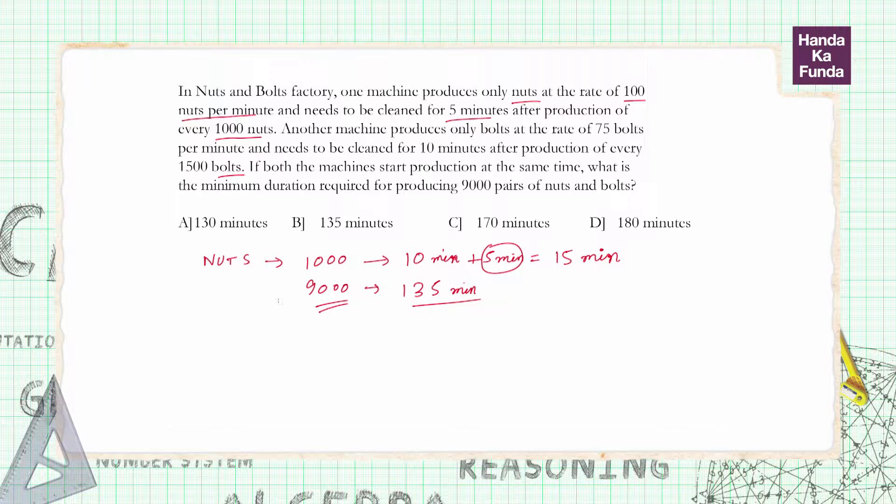The time taken for production of 9000 is not 135 minutes, but we will remove the last 5 minutes which are required for cleaning. So the actual time required for production of 9000 is 130 minutes.